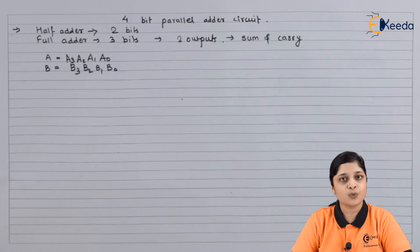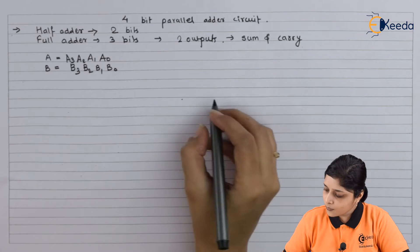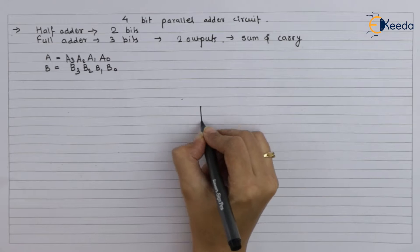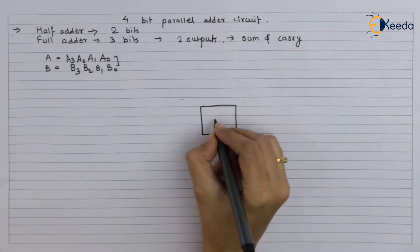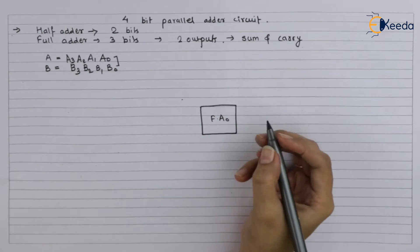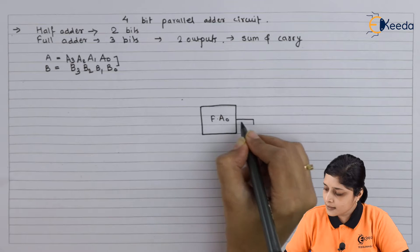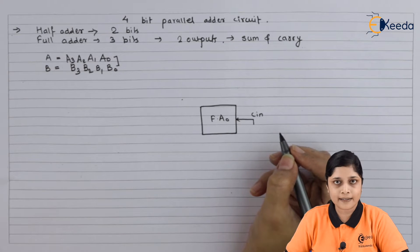Cascading you have to do. Now let's draw first full adder. This is for these two bits addition: full adder suffix 0. C_in you have to take as a carry.